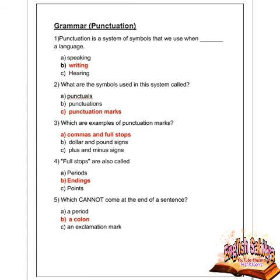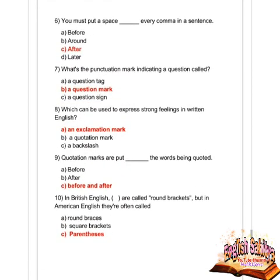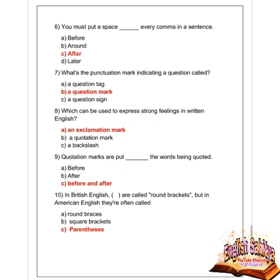Next question: which punctuation mark cannot come at the end of a sentence? Options are a period, a colon, and an exclamation mark. Option B is correct — a colon cannot come at the end of a sentence. Next question: you must put a space where after every comma in a sentence? Options are before, around, after, and later. Option C is correct — after.